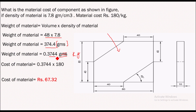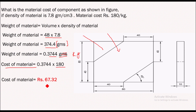Converting to kg, we get 0.3744 kg. The cost of material equals weight in kg into per kg cost: 0.3744 multiplied by 180 rupees gives us 67.32 rupees. So 67.32 rupees is the cost of this material. Hope you understood this video, thank you for watching.